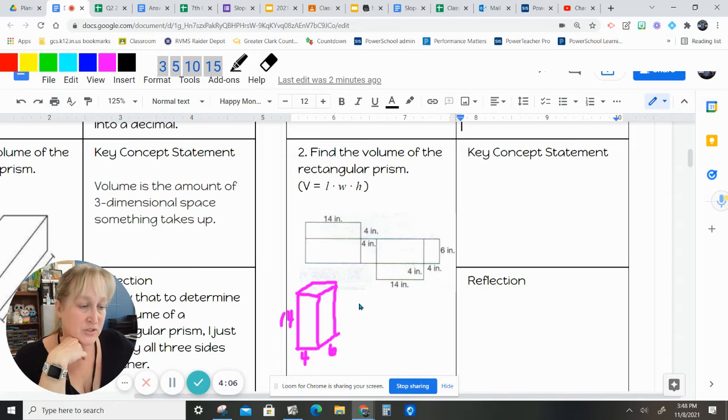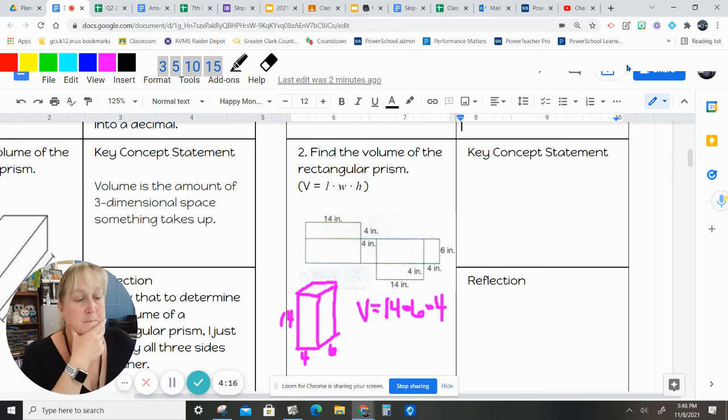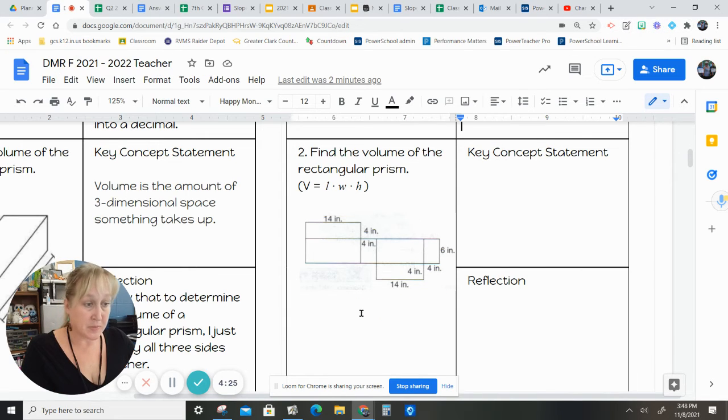So, we're going to have to do the volume equals 14 times 6 times 4. This is probably all going to disappear as soon as I start typing stuff in. So, if you need to push pause, push pause. V equals 14 times 6 times 4. You're going to use your calculator and you're going to figure out what that answer is.